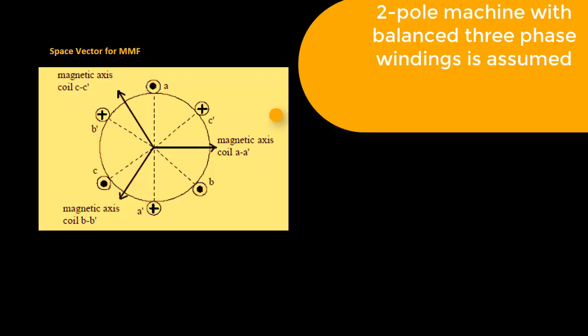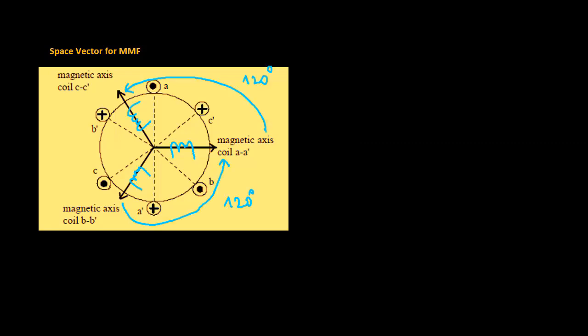To simplify the analysis, a two pole machine with balanced three phase windings is assumed. Stator of a three phase, two pole AC machine may be represented by three sinusoidally distributed windings whose axes are displaced by 120 degrees.